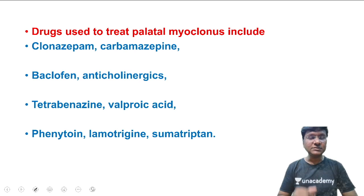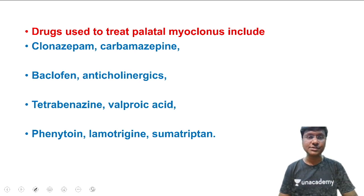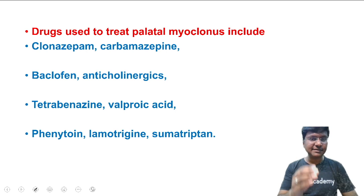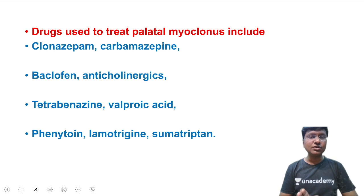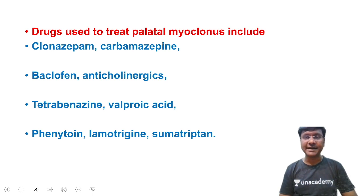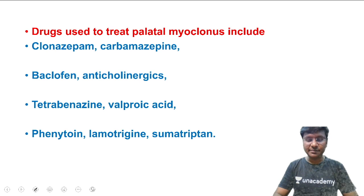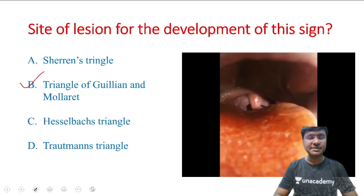The drugs used for treatment of palatal myoclonus include clonazepam, carbamazepine, baclofen, anti-cholinergic drugs, tetrabenazine, valproic acid, phenytoin, lamotrigine, and sumatriptan. Any of these drugs can be used in the treatment of palatal myoclonus. A very important MCQ point: the site of lesion is the Triangle of Guillain and Mollaret.